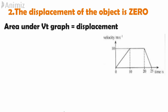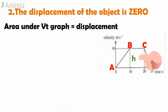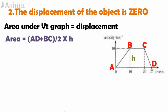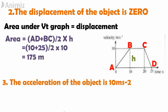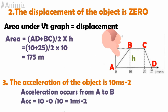Now let's check option 2: displacement of the object is 0. The area under a v-t graph gives displacement. Using the trapezium shape with points A, B, C, D and height h: area of trapezium = (AD + BC) / 2 × height. AD equals 25, BC equals 10, divided by 2, multiplied by height 10, gives 175 metres. So the displacement is 175 m, not 0 — that is a wrong answer. Option 3 states acceleration is 10 m/s², but we found acceleration from A to B is 1 m/s² — also wrong.